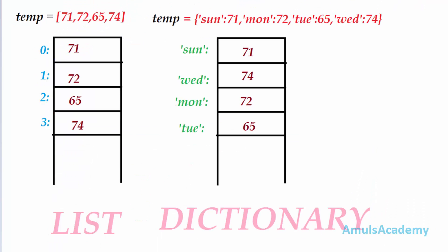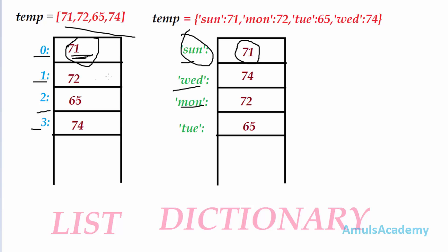Here is an image that explains the difference between list and dictionary. In the list we can see index values, and using these index values we can access the data. The values appear in order: first 71, then 72, then 65, then 74. But in the dictionary it is unordered — first 71 is present, next 74, then 72, then 65. That's because a list follows linear order with first, second, third elements, but in a dictionary there is no such ordering — only the key matters.